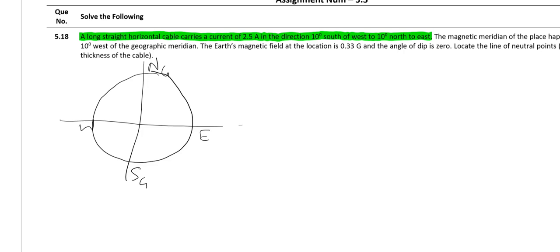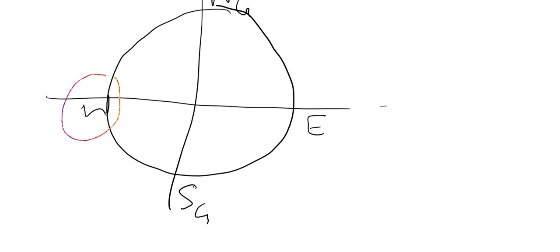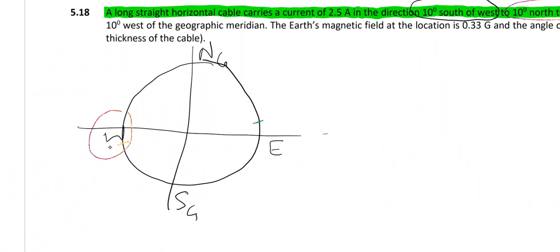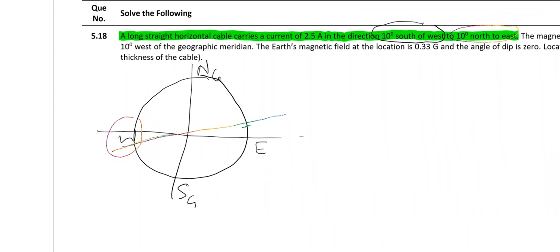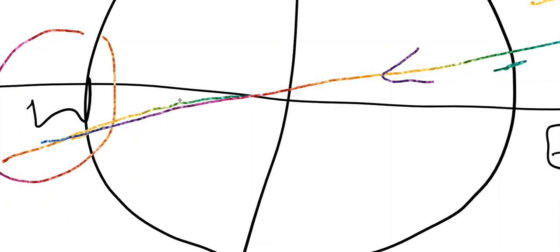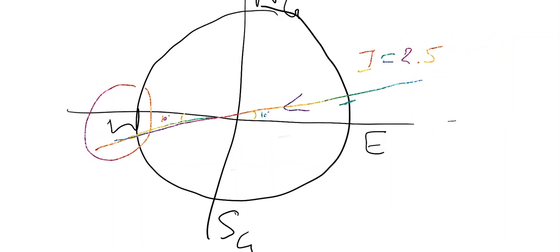So how is the wire placed? The wire is placed such that it is 10 degrees south of west — so here is west and I go 10 degrees south — to 10 degrees north of east. So I place the cable like this, and the current is going from west to east. This is how a current of 2.5 ampere passes through the wire. This angle is 10 degrees.